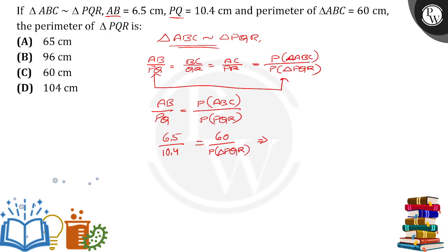If I do cross multiplication, what I will get is 6.5 into perimeter of triangle PQR is equal to 60 into 10.4. Then perimeter of triangle PQR is equal to 60 into 10.4 divided by 6.5.